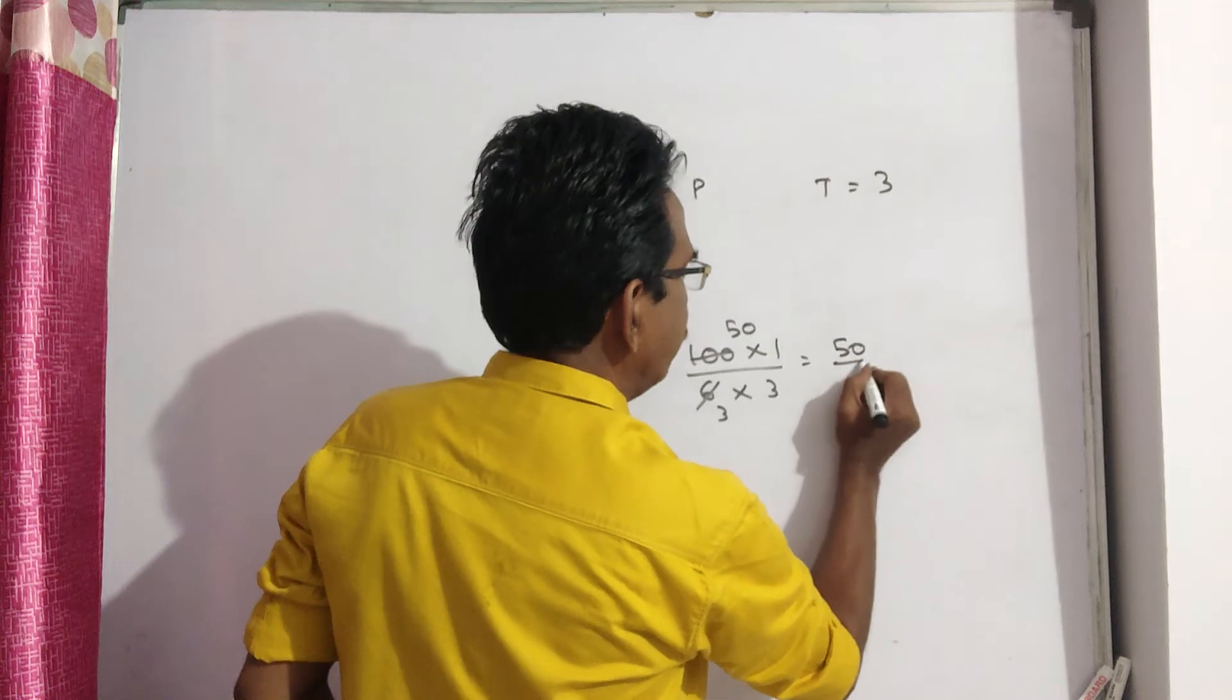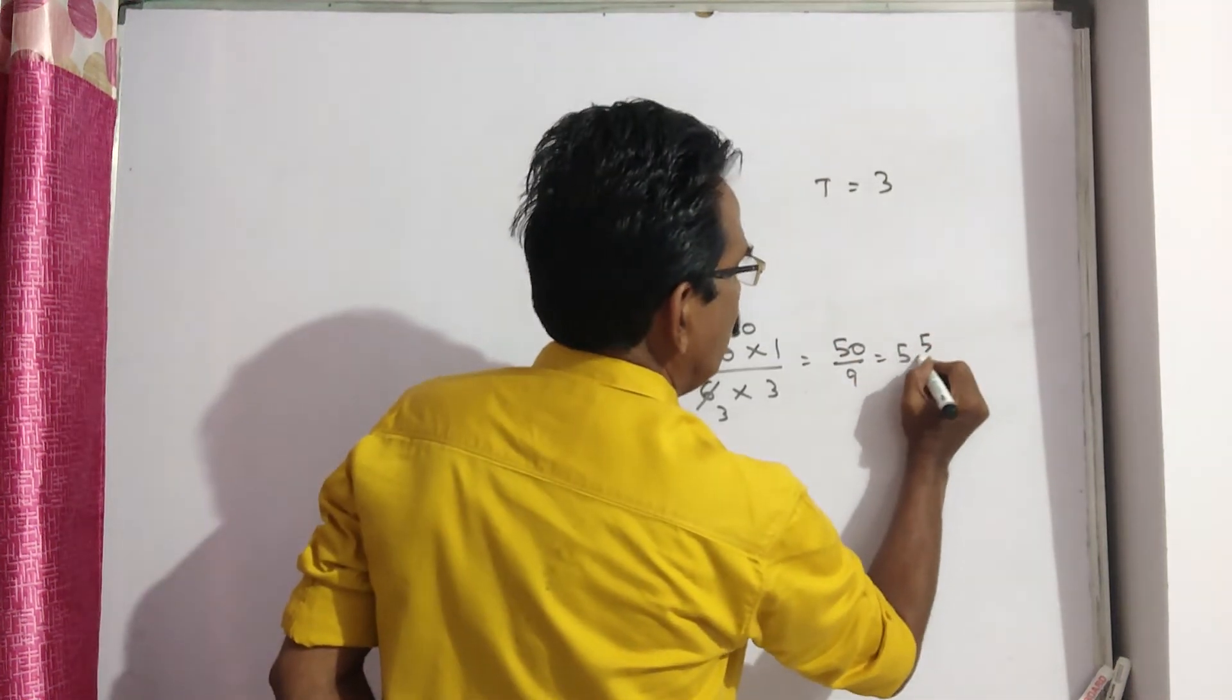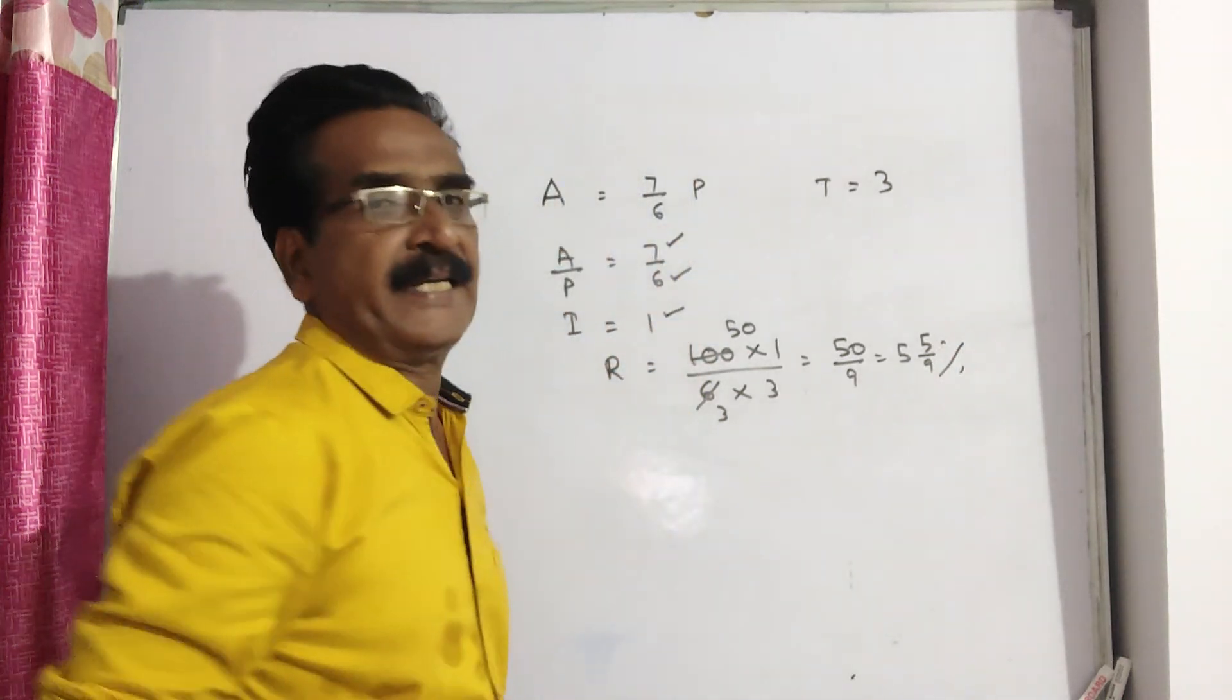So, 50 by 9. 50 by 9 means 9 into 50: 5, 45, remainder 5. 5 by 9 percent. 5 and 5 by 9 percent friends.